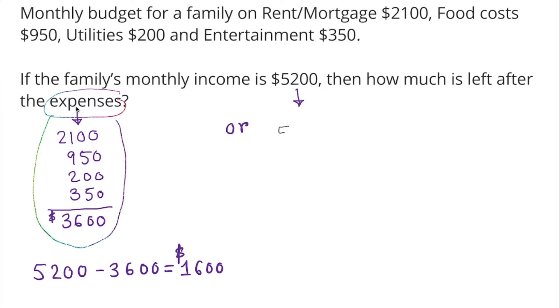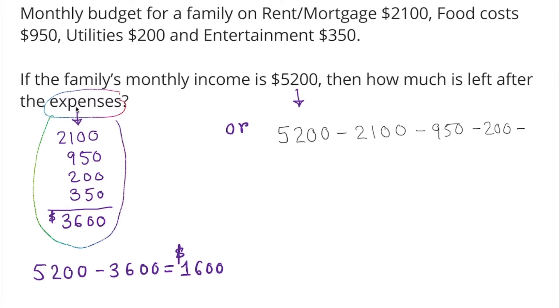We can take the total monthly income of $5200 and subtract each expense individually: minus 2100, minus 950, minus 200, minus 350 — and that also gives us $1600.